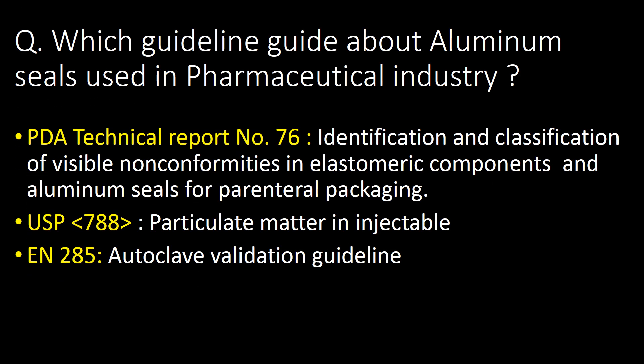Which guideline covers aluminum seals used in the pharmaceutical industry? PDA Technical Report Number 76 — identification and classification of visible non-conformities in elastomeric components and aluminum seals for parenteral packaging — is the most referred guideline. Along with this, USP chapter number 788 for particulate matter in injectables, and N-285 for autoclave validation, are also referred to for aluminum seals.